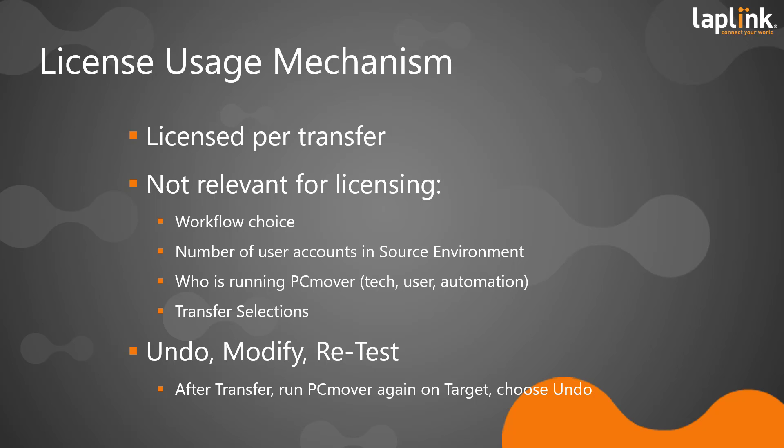The Undo option will revert the configuration of that machine to where it was before PCMover ran. So you can set up a pair of test machines, perform a transfer consuming one license, run Undo to revert the new environment back to its original configuration, and then try a different workflow or test a PCMover policy. You can transfer, undo, modify the configuration, transfer, undo, and modify as much as you'd like on a single license — as long as you are not introducing new hardware or re-imaging either environment.